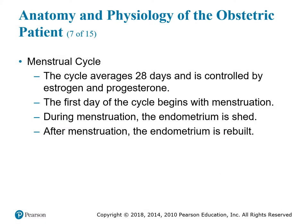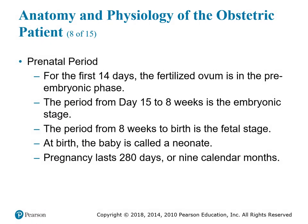The menstrual cycle averages about 28 days and is controlled by estrogen and progesterone. The first day begins with menstruation, during which the endometrium is shed and then rebuilt for fetal nourishment. For the first 14 days of fertilization, the ovum is in the pre-embryonic phase. Day 15 to 8 weeks is the embryonic stage. From 8 weeks to birth is the fetal stage. At birth, the baby is called a neonate. Pregnancy lasts about 280 days or 9 calendar months.